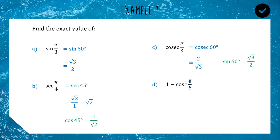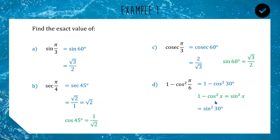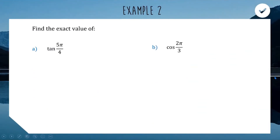For question d, we need 1 − cos²(π/6). π/6 is 30 degrees. Using the Pythagorean identity, 1 − cos² θ = sin² θ, so we can write this as sin²(30). Sine 30 is 1/2; squaring that gives 1/4. That's our answer.